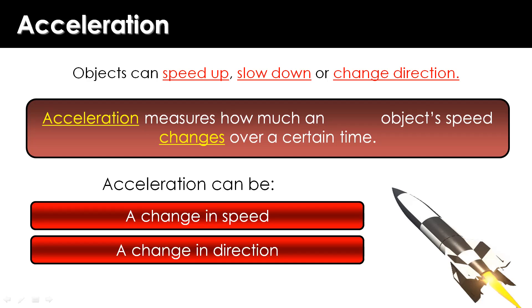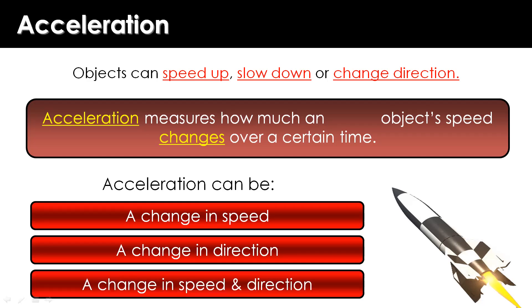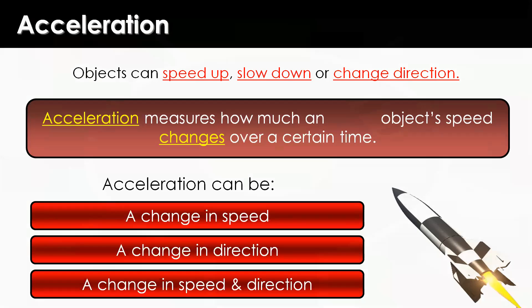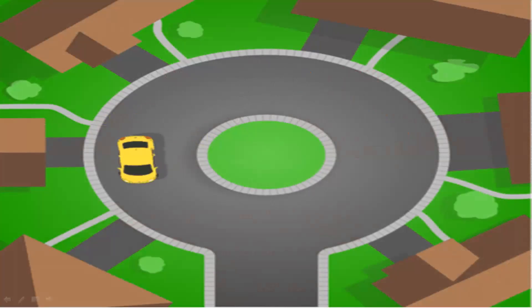There can be a change in both speed and direction. The conditions for acceleration are: one, change in speed; two, change in direction; three, change in both speed and direction. When only direction changes, it is called Uniform Circular Motion.